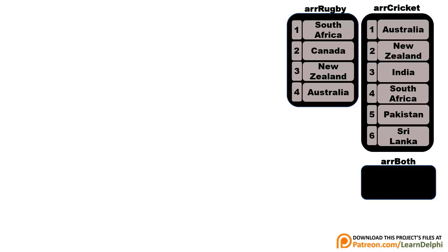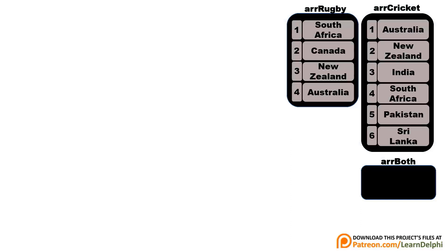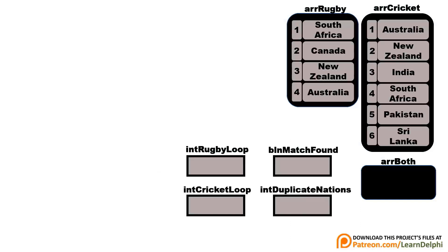The ideal way to size and resize an array is to use a dynamic array, like we learned in the previous tutorial. The dynamic array will start without elements. You may also declare a fixed size array, but then you must provide enough empty elements in advance. We will use a dynamic array because it is more efficient and does not use unnecessary space in memory. To find the intersection between the two arrays, your code must loop through both arrays with two loops. We need a variable to count cycles for the rugby array, another for the cricket array, and a boolean flag to keep track when a match is found.